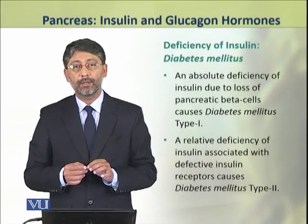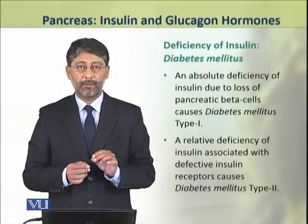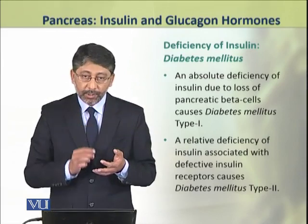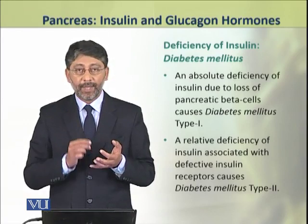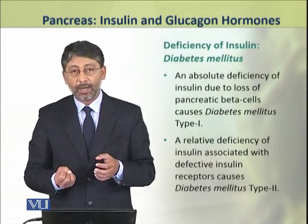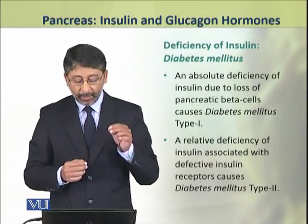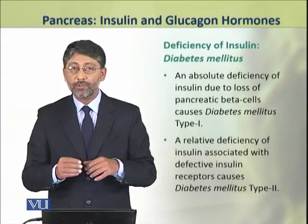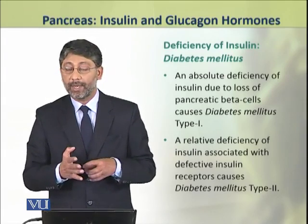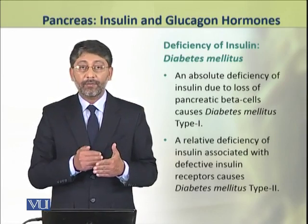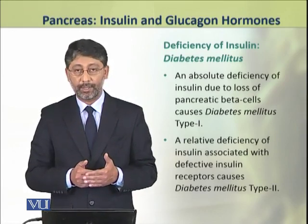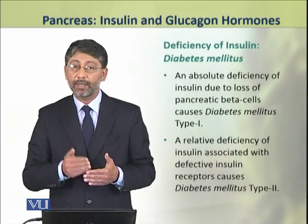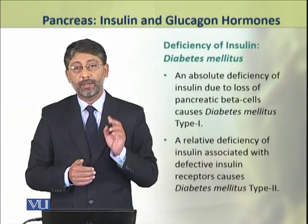The deficiency of insulin causes a disease which is called diabetes mellitus, which is of two types. The absolute deficiency of insulin — that is, reduced release of insulin by the beta cells — causes diabetes mellitus type 1. The relative deficiency of insulin, due to defective insulin receptors in the target tissues, causes diabetes mellitus type 2.